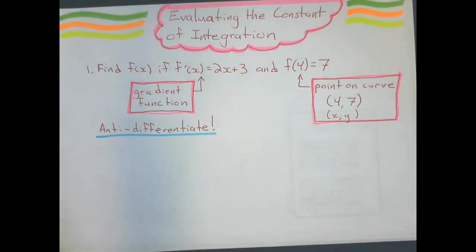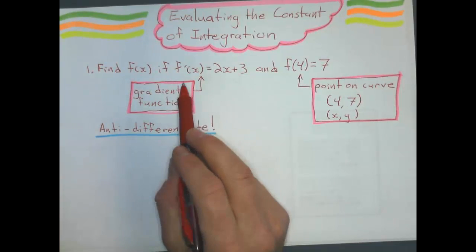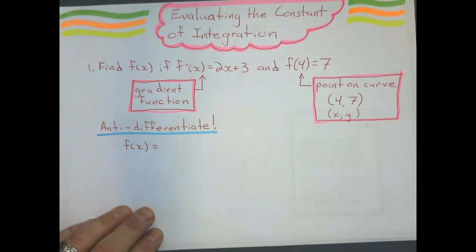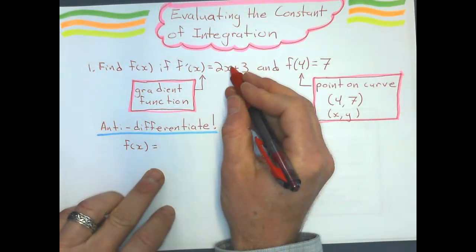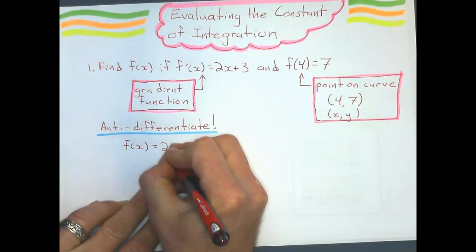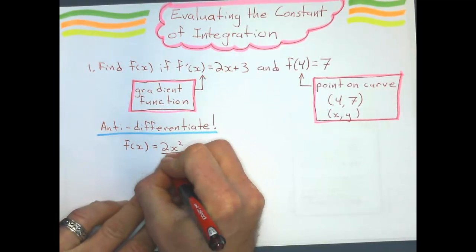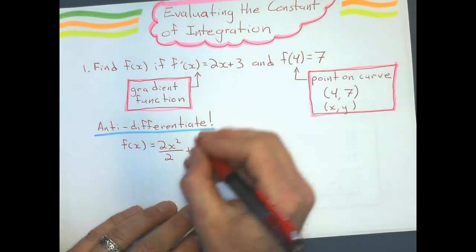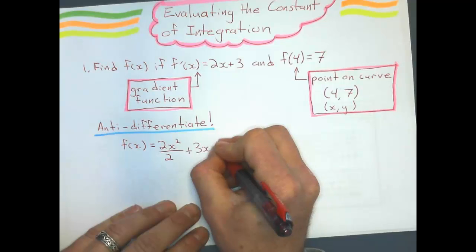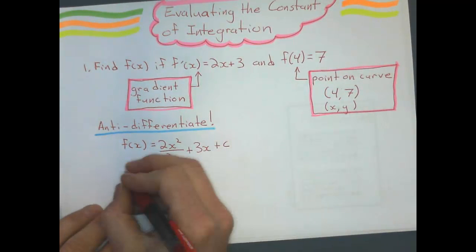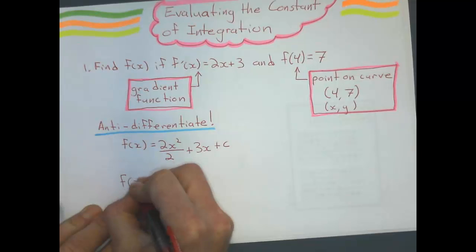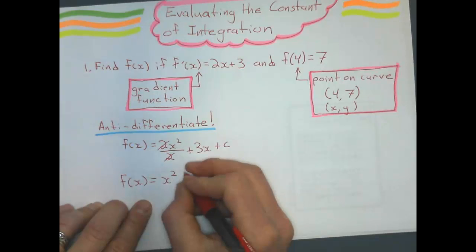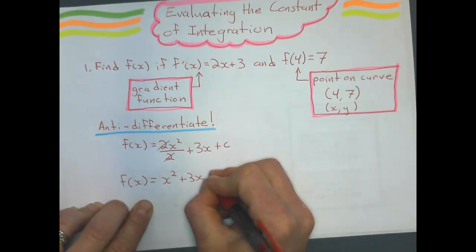Our first step is we're going to anti-differentiate this one. That means we're going to find f(x). We do that like we did the other day - add one to the exponent and divide by that new exponent. So that's 2x² over 2, plus 3 anti-differentiates to 3x, and it's plus some constant. I'm going to simplify this because 2 over 2 cancels out. So the original function is just x²+3x+c.